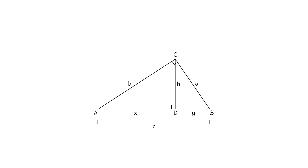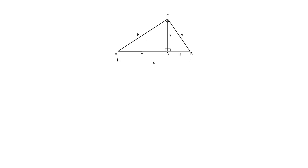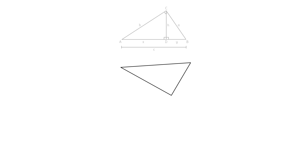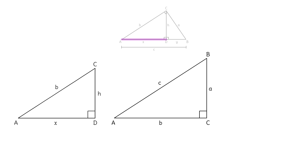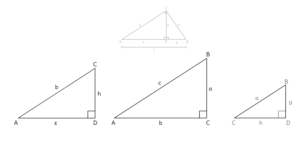Let's break down the diagram so we can better visualize the three triangles. First, let's flip the big triangle so its longest leg is horizontal. Now let's redraw the triangle on the left — its longest leg is already horizontal. Let's rotate the triangle on the right 90 degrees counterclockwise so its longest leg, H, is horizontal. Now we see the three right triangles, all in the same orientation.